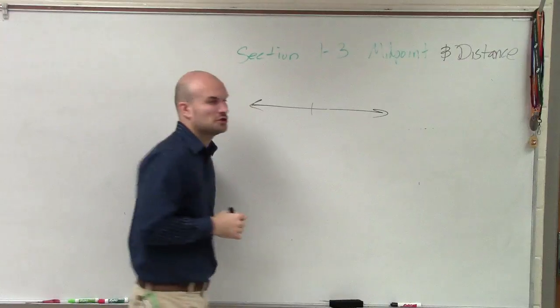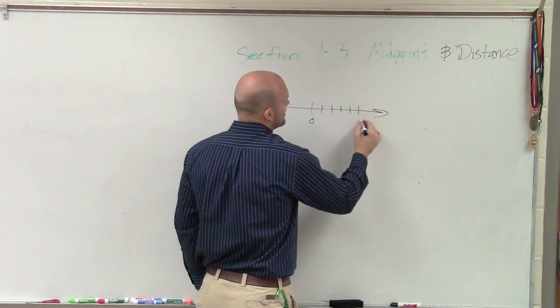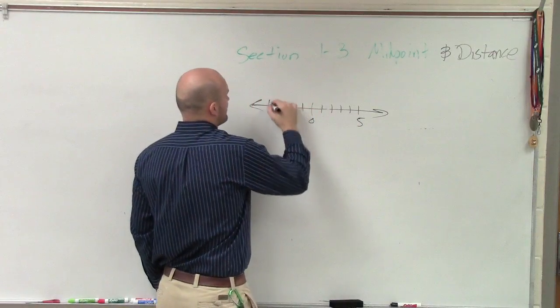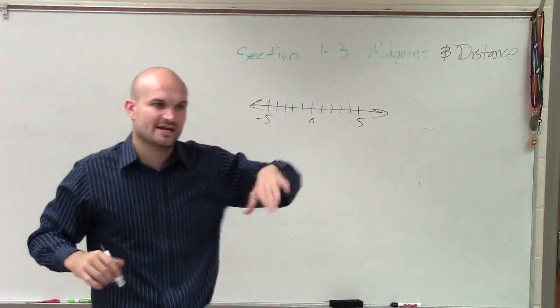Well, the first thing we did was learn how to plot points on a line graph, right? We say here's zero, one, two, three, four, five, one, two, three, four, five. So we determined that going to the right was positive, going to the left was negative, right?